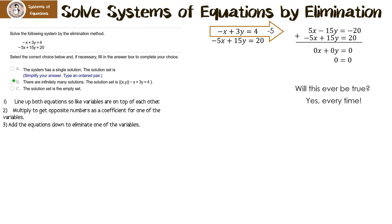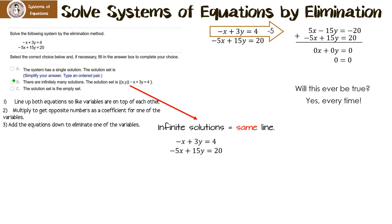Let me show you how this works. Remember, infinite solutions mean when we graph them, we have the same line. If I divide 5 out of the second equation, we end up with negative x plus 3y equals 4 — and that's exactly like the first equation. So it is definitely true: there are an infinite number of solutions because these two equations are the same line.